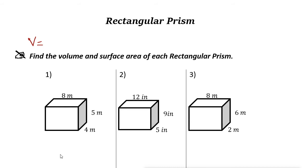To find the volume of each rectangular prism, you can use this formula. Volume V is the length L times width W times height H.